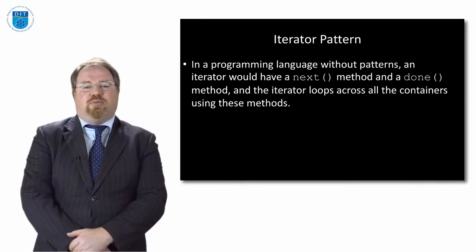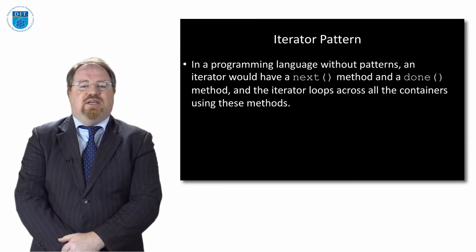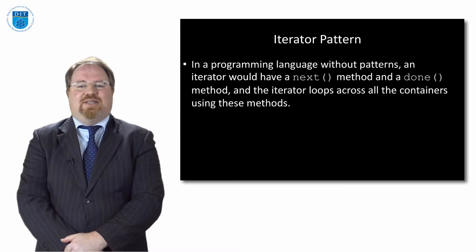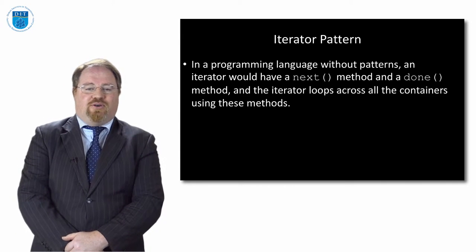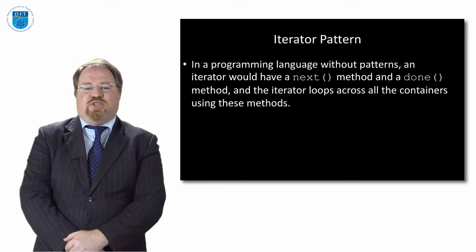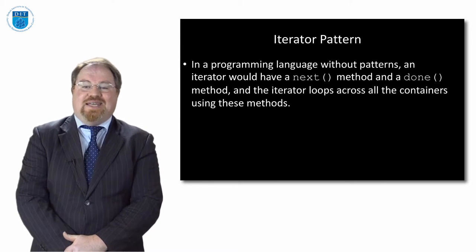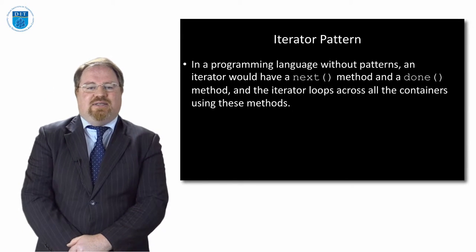In normal programming languages we would have two methods that would allow us to achieve that: a method called next and a method called done. The method called next allows us to move the pointer across to visit the next element, and the done method checks if we've reached the end of the list. That's generically speaking; in Python it's slightly different.